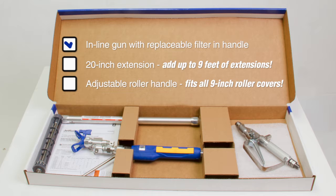The Jet Roller system includes an inline gun with a replaceable filter in the handle, a 20-inch extension, and an adjustable roller handle which fits your favorite off-the-shelf 9-inch roller covers.